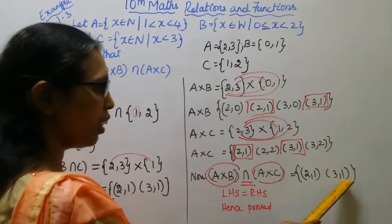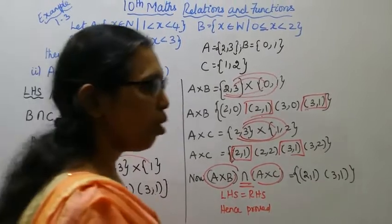So we have {(2,1), (3,1)}. Left hand side equals right hand side. Hence proved.